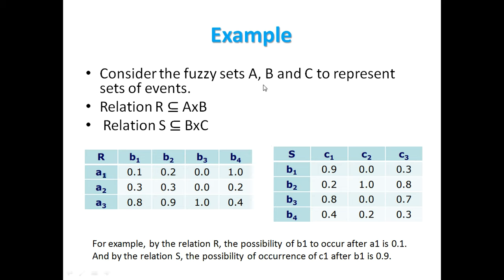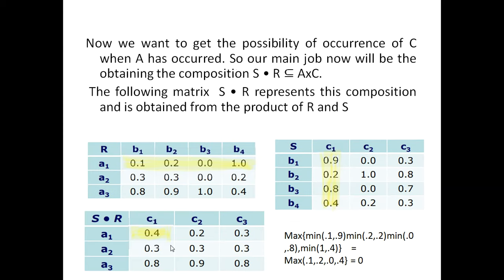For example, say we have fuzzy sets A, B, and C. Relation R is the Cartesian product of A and B, and relation S is the Cartesian product of B and C. These represent sets of events — by relation R, the possibility of B1 occurring after A1 is 0.1, and by relation S, the possibility of C1 occurring after B1 is 0.9. If we want to find the possibility of C1 occurring after A1, we cannot do it directly from either relation alone — we need to use composition.